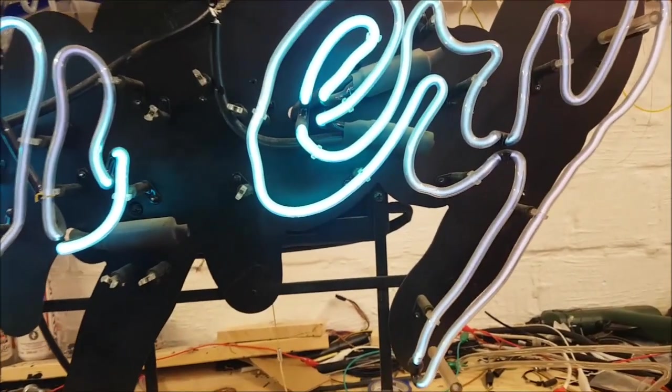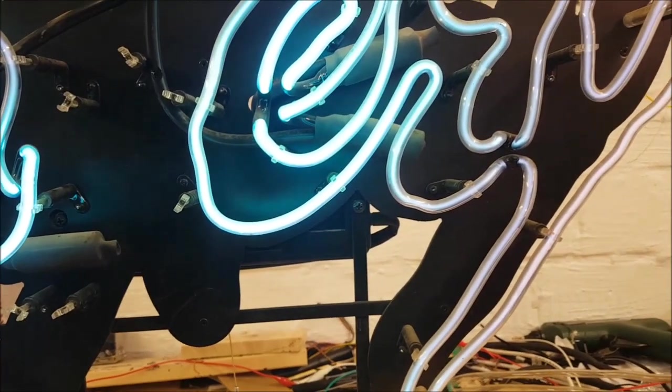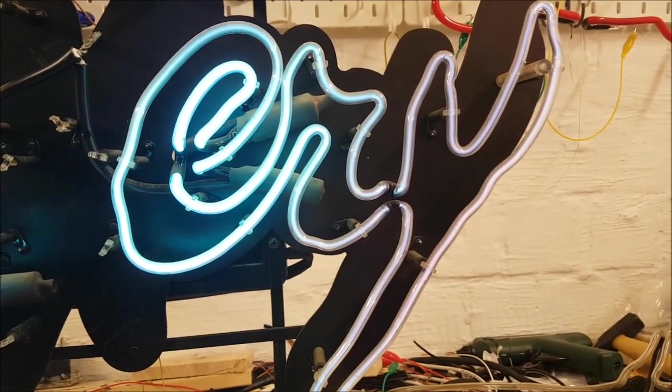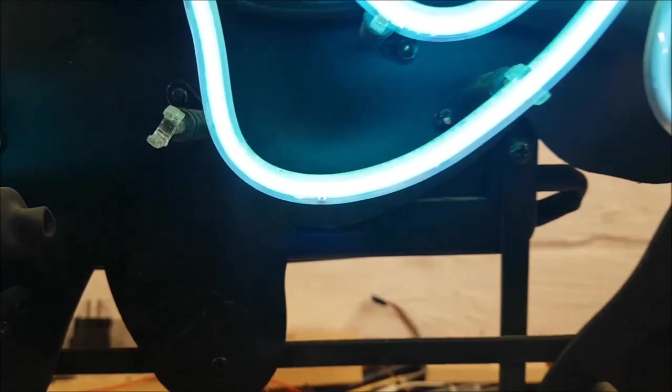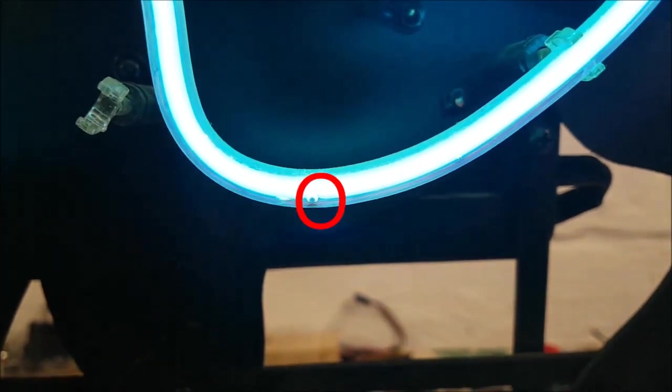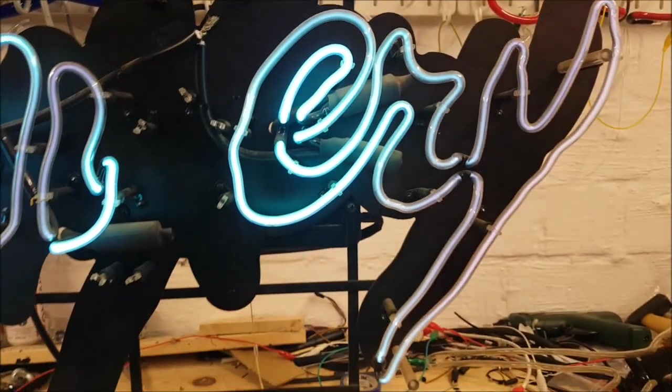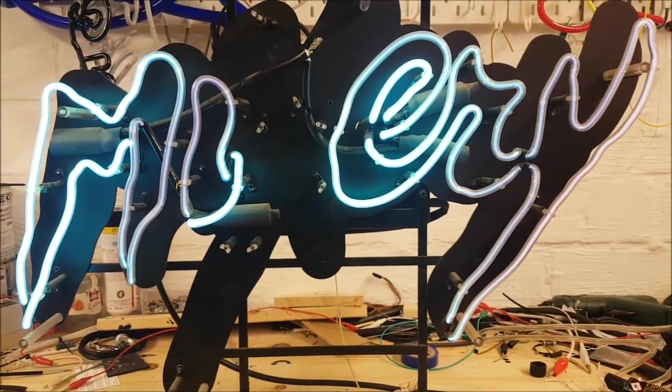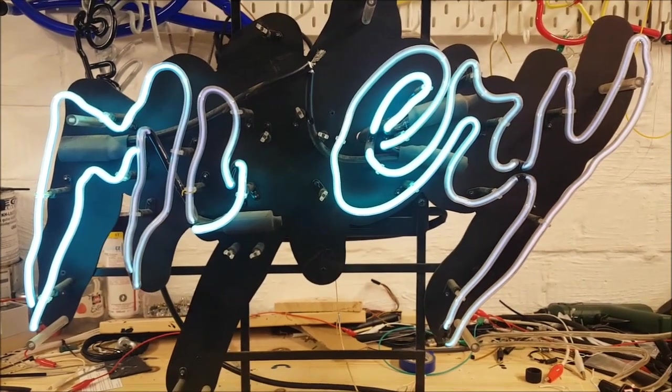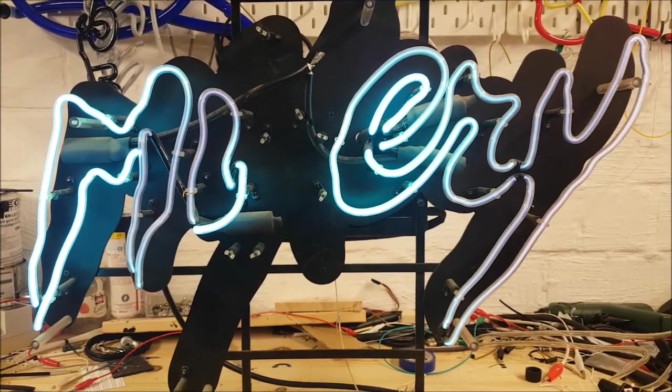This is because the mercury in these argon tubes has not yet evaporated and spread all across the tube. You can see a little ball of mercury right here, which is why this area is so bright. This is a normal appearance when the sign has been out of operation for some weeks or months. It will cure itself in a few hours of operation.